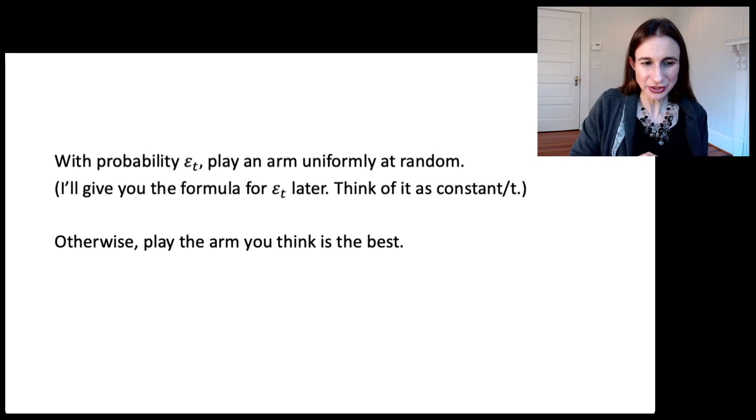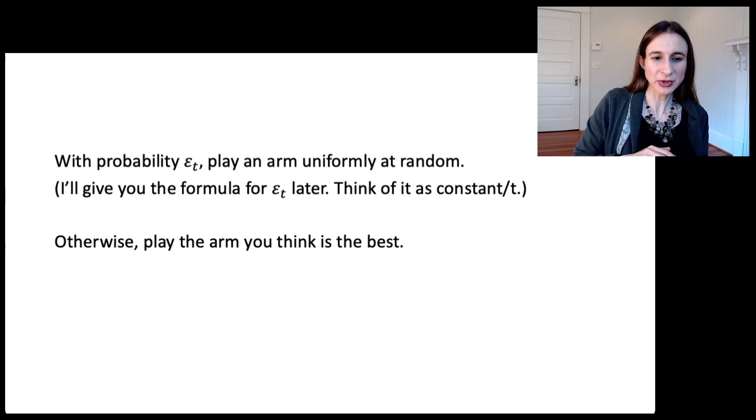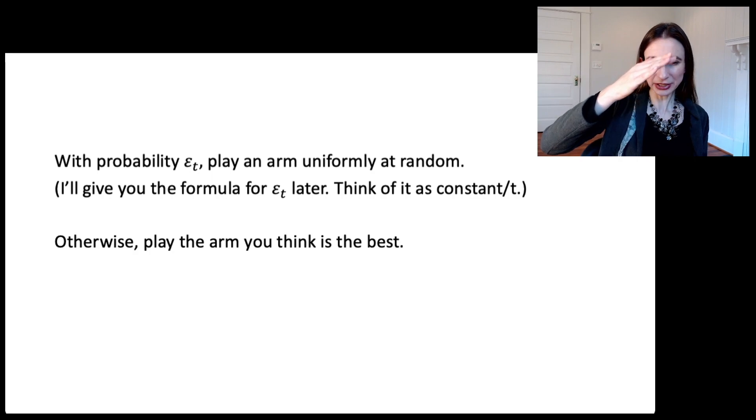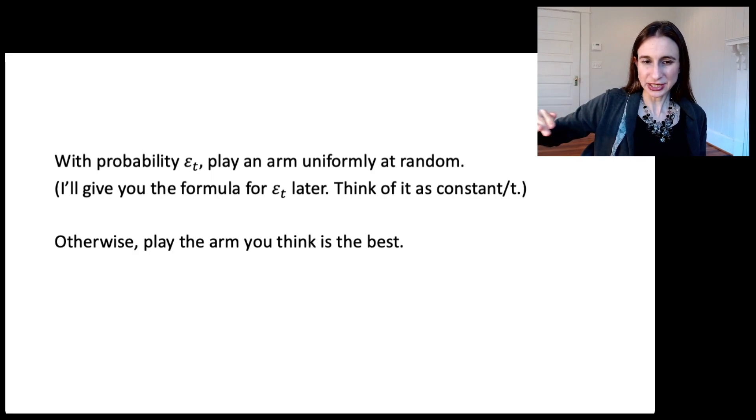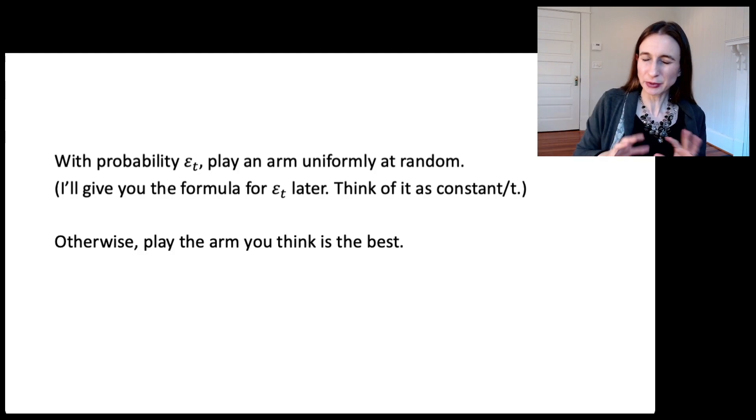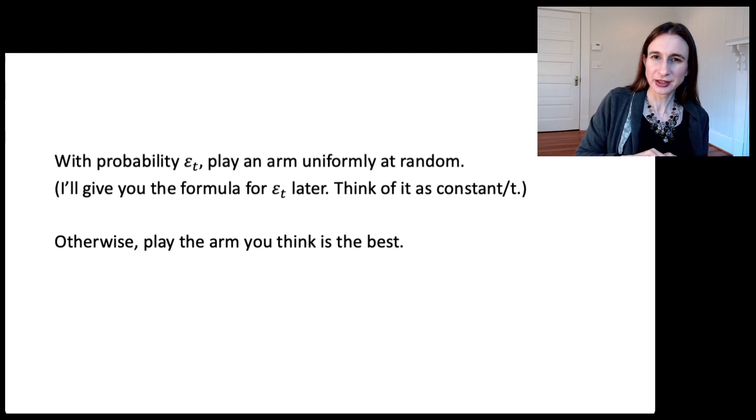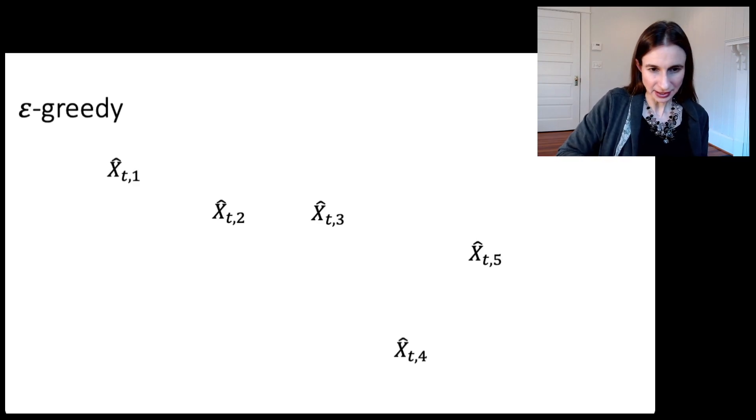For epsilon_T, I haven't given you the formula. I'll give you that formula later. But for now, I want you to think of it as a constant divided by T. So I want you to think of the probability of exploration kind of decaying over time as one over T. So after a long, long time, you won't really do much exploring. You're going to do most of your exploring at the beginning. So you'll see that here.